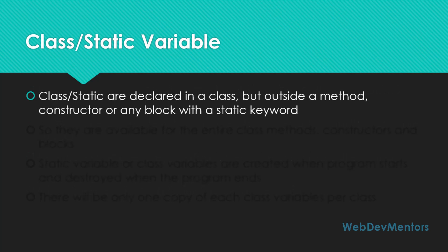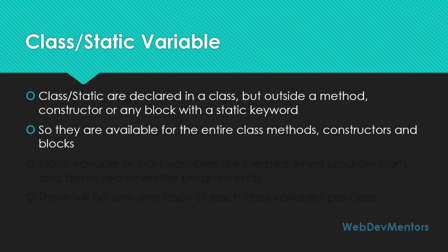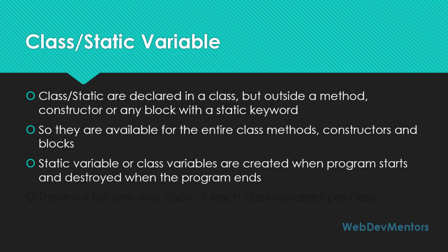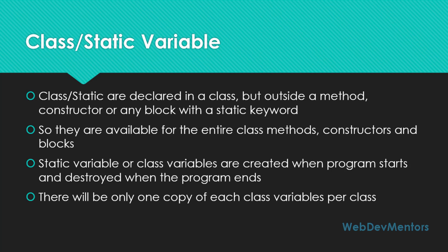Class or static variables are declared in a class but outside a method, constructor, or any block — similar to instance variables — but with the static keyword in front of them. The difference between instance variables and static variables is that static variables are created when the program starts and destroyed only when the program ends, not when the object is garbage collected. If you create a static variable for a class, only one copy is created for the entire class.